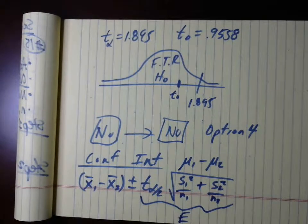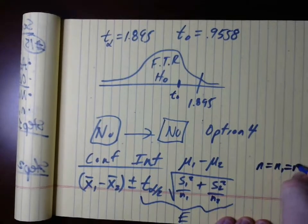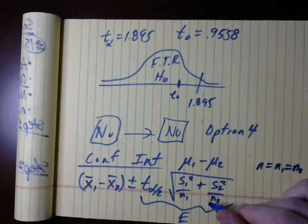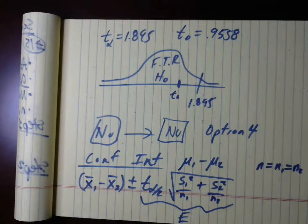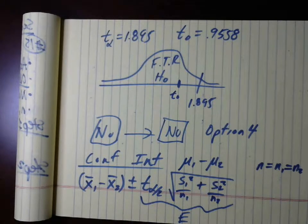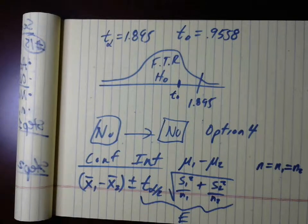We can also figure out the sample size needed for a specific margin of error e. Similar to proportions, you'd set n = n₁ = n₂, assuming equal sample sizes. That gives a common denominator. However, looking through the book, I'm not seeing the sample size formula covered here. I don't think they'll ask you a question about that, but if you see one, let me know and we can go over it.